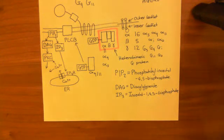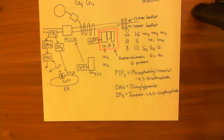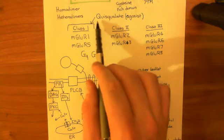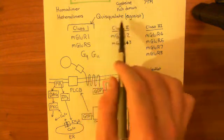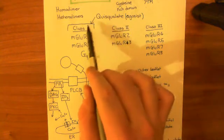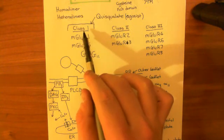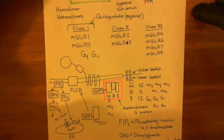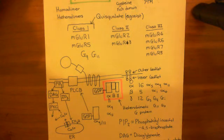That's how the class 1 metabotropic glutamate receptors achieve their downstream effect. They are agonized by quisqualate or quisqualic acid, which binds in the same place as glutamate and activates the receptor just like glutamate. In the next video, we'll discuss class 2 and class 3 metabotropic glutamate receptors.